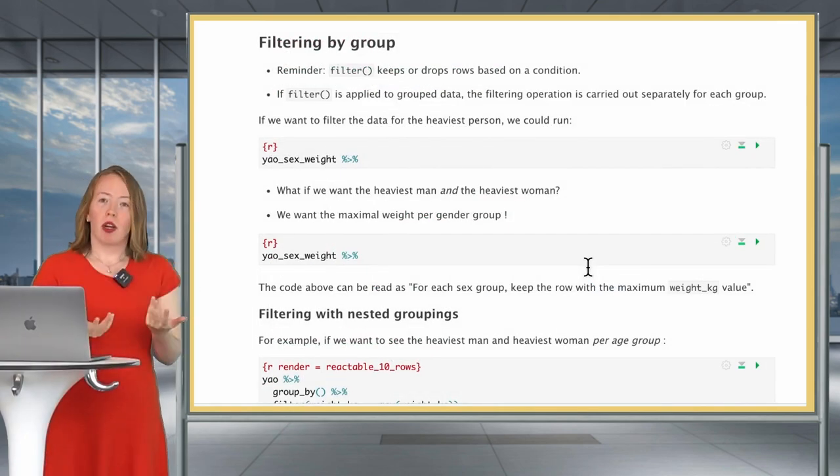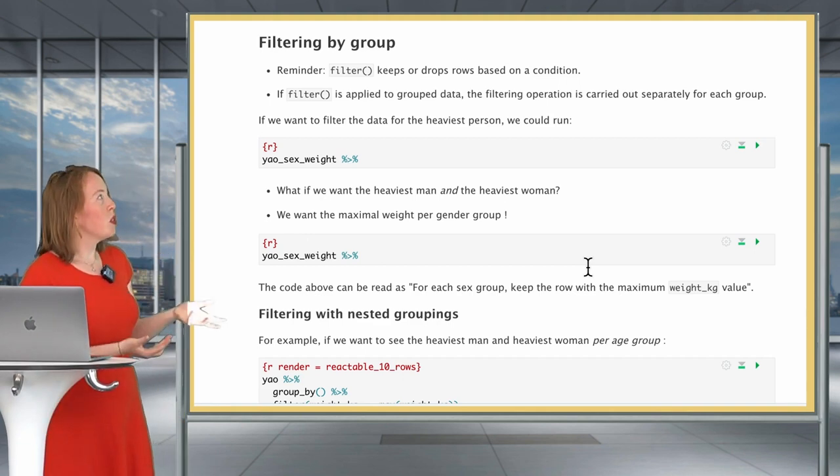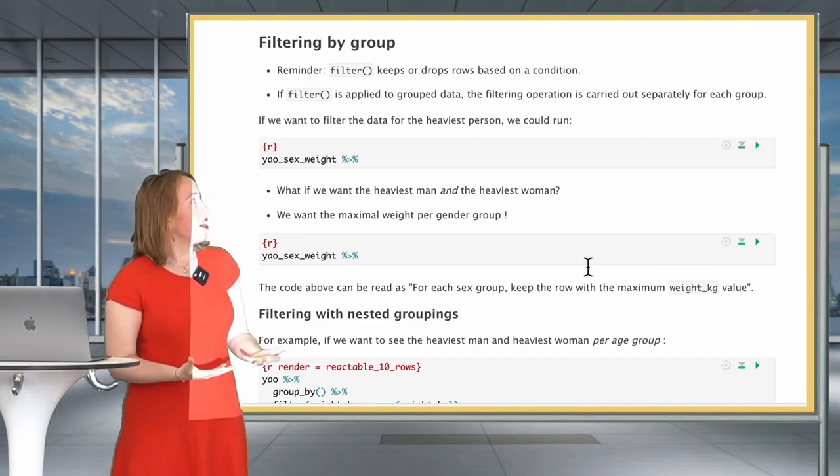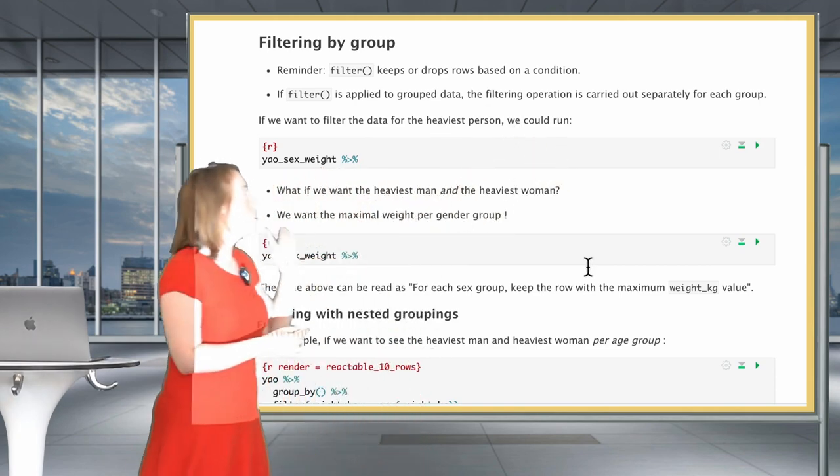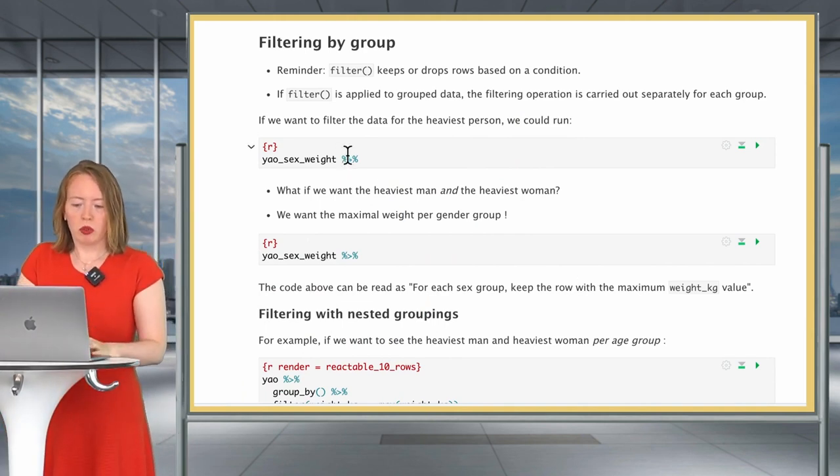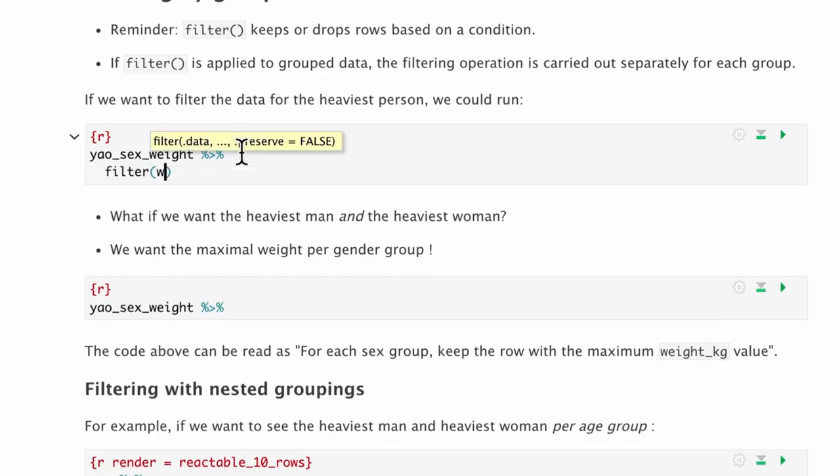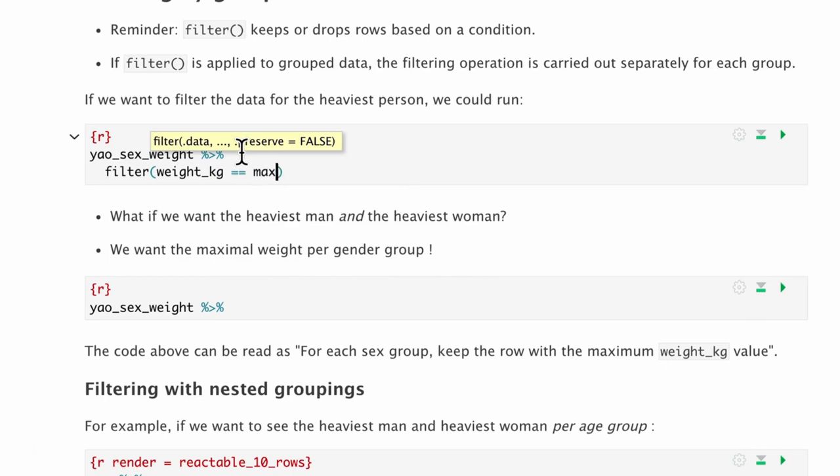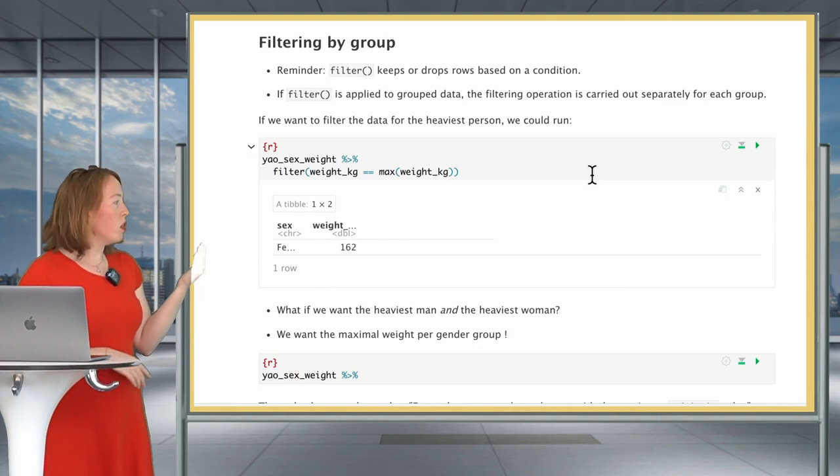Now we will see another topic, which is filtering by groups. As a kind reminder, I'm sure you're now familiar with it, filter is used to keep or drop rows based on a condition. And filter, when it is applied on grouped data, is going to do the filtering operation separately for each group. So what does this mean? Well, imagine we first want to filter the data for the heaviest person. We would write filter weight_in_kilogram == max(weight_in_kilogram). This gives us one female individual, which is 162 kilograms.